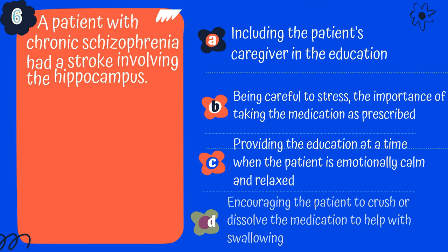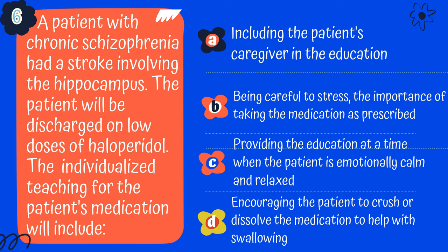Question 6. A patient with chronic schizophrenia had a stroke involving the hippocampus. The patient is going to be discharged on a low dose of Haldol. What teaching will you give them about the medication? A. Include the patient's caregiver in the education. B. Stress the importance of taking the medication as prescribed. C. Provide education when the patient is emotionally calm and relaxed. Or D. Encourage the patient to crush or dissolve the medication to help with swallowing.